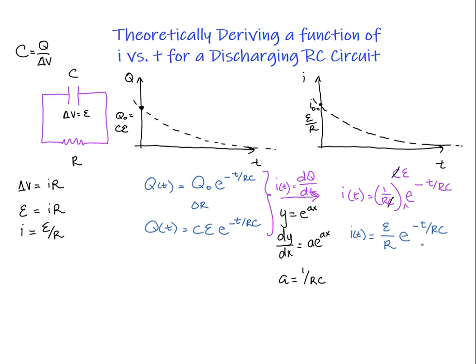So I have this function that looks almost identical to this, and then I can substitute in i naught instead of EMF over R. So I'll go ahead and do that, but they're both equivalent. i(t) is equal to i naught times e to the negative t over RC.